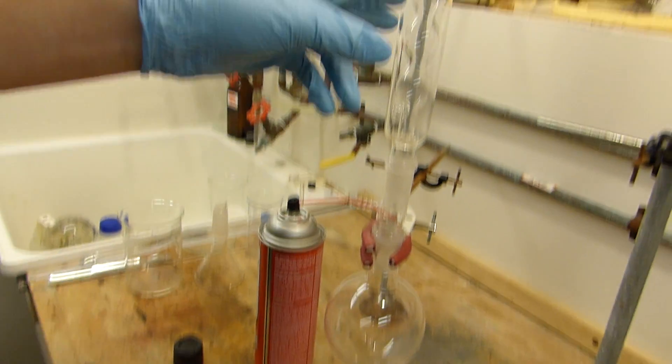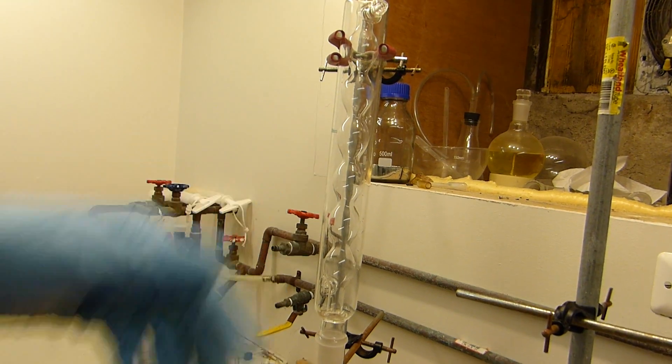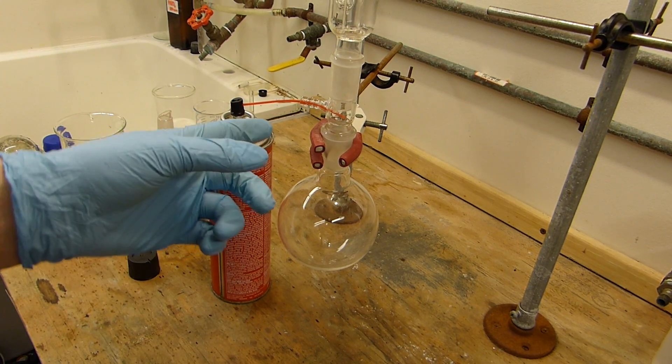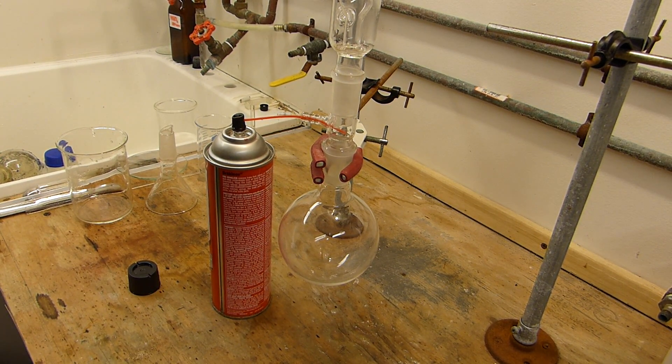Up here I have a reflux condenser. There's no water in it or anything but it's mainly just to keep the splashing down and it'll keep most of the vapors condensed considering they'll condense at 121 celsius and it'll be coming out of the can much colder than that. So anyway let's go ahead and do that.